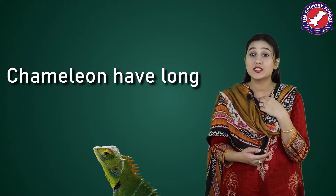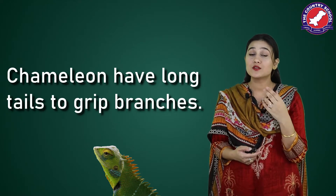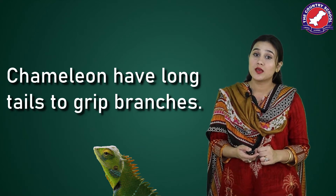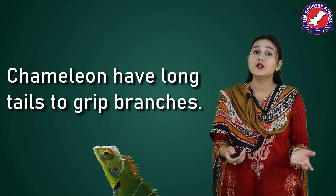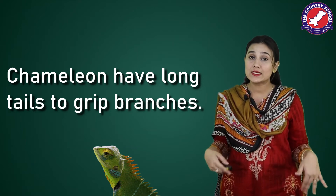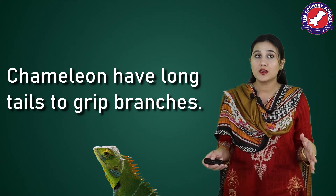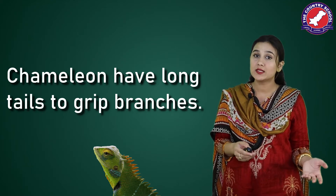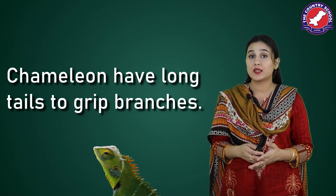Chameleons are also arboreal animals. Have you seen a chameleon? It changes its colour according to its surroundings. Another characteristic is that they have strong claw-like feet and a very strong tail, so they can grip branches. Their tails help arboreal animals to balance their bodies, because their body weight sometimes goes off balance, so the tail is there to help them.